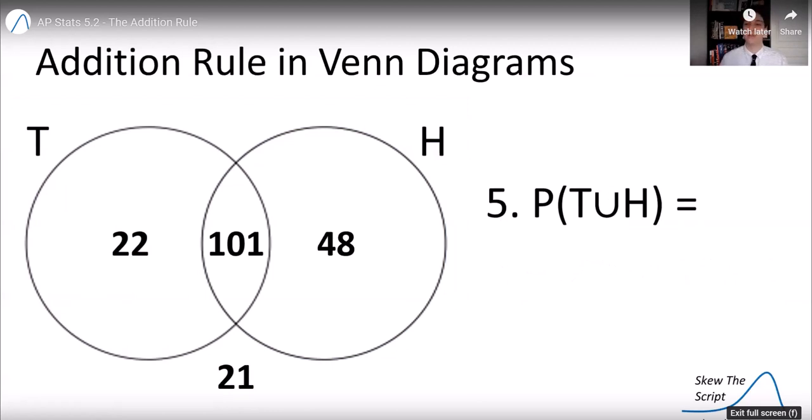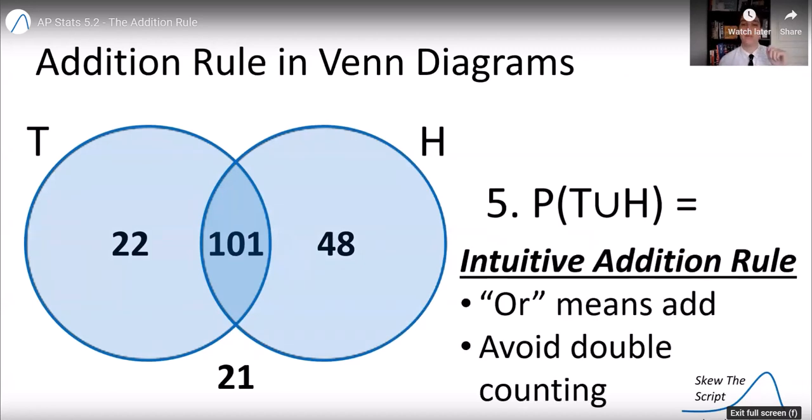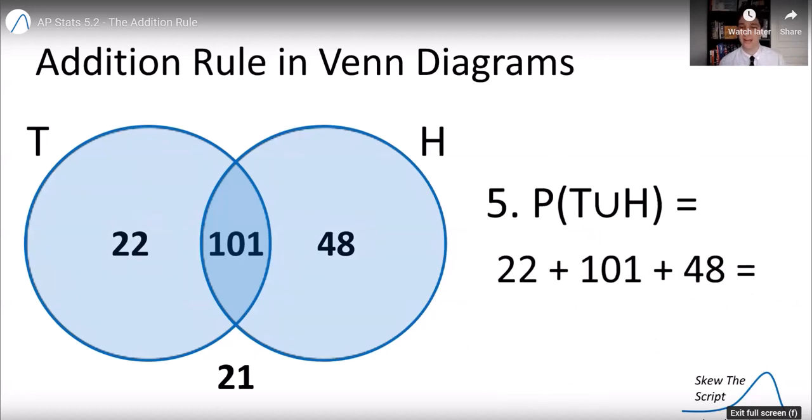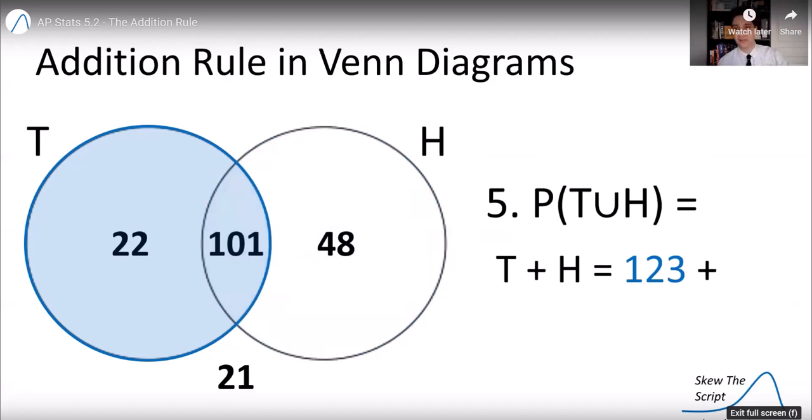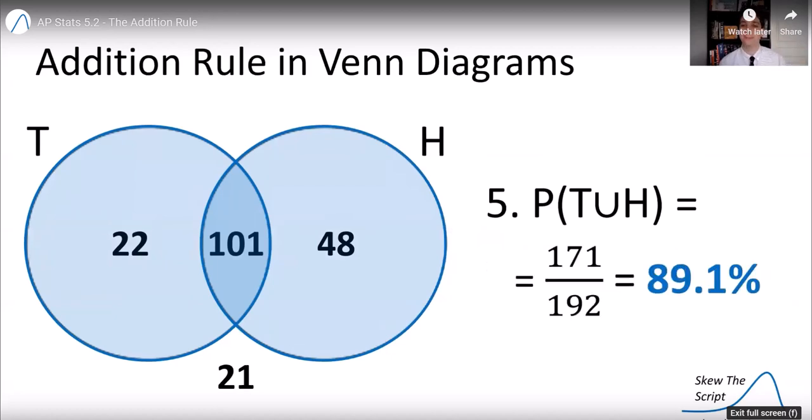And then we can also find the probability of tall or high-income. So again, we need to make sure we don't double count. So let's do this carefully. OR means one, the other, or both. So let's add up those three categories that fit in tall, high-income earner or both. 22 plus 101 plus 48. We're going to add, because OR means add, we're going to avoid double counting. Add those up, we get a numerator of 171. If you want to use the full circles, we can, but we need to adjust for double counting. So we add tall plus high-income, that's the 123 in the tall circle, plus the 149 combined in the high-income circle, then subtract off the 101 who were double counted for being in both, and you still get 171. So either way works, make sure you don't double count. When we divide that by 192, you get 89.1%.